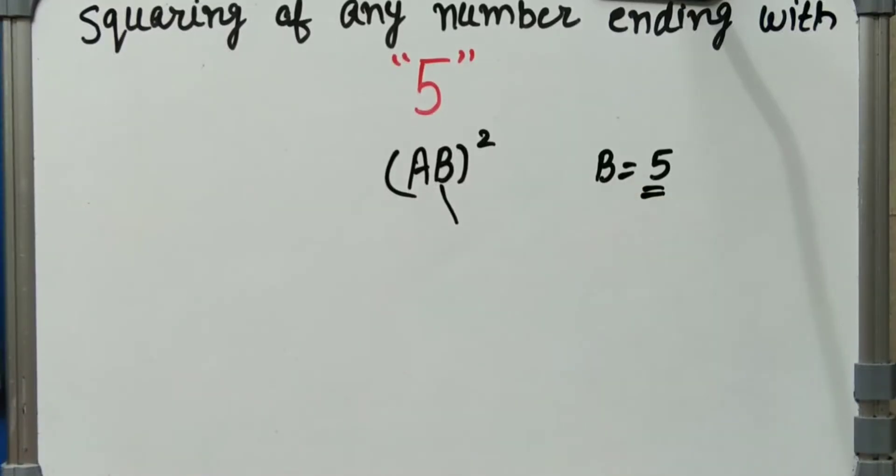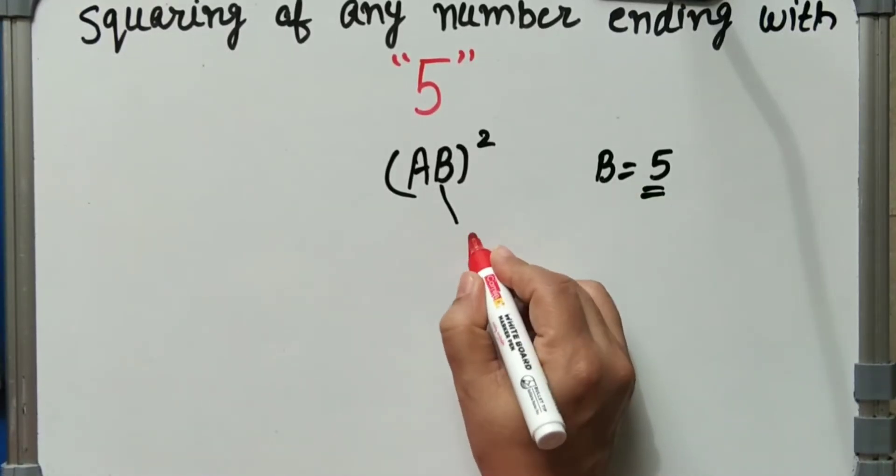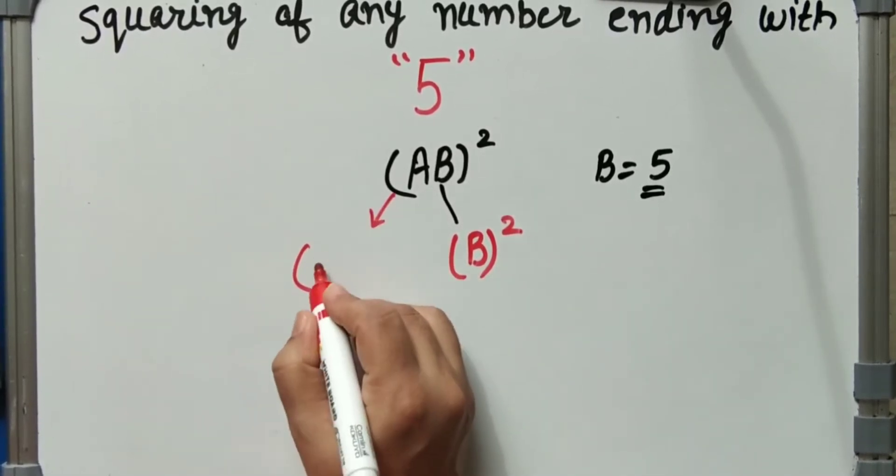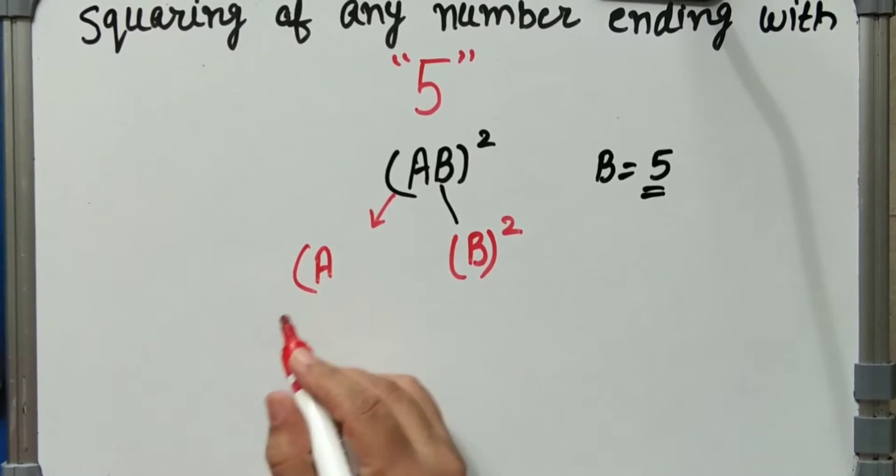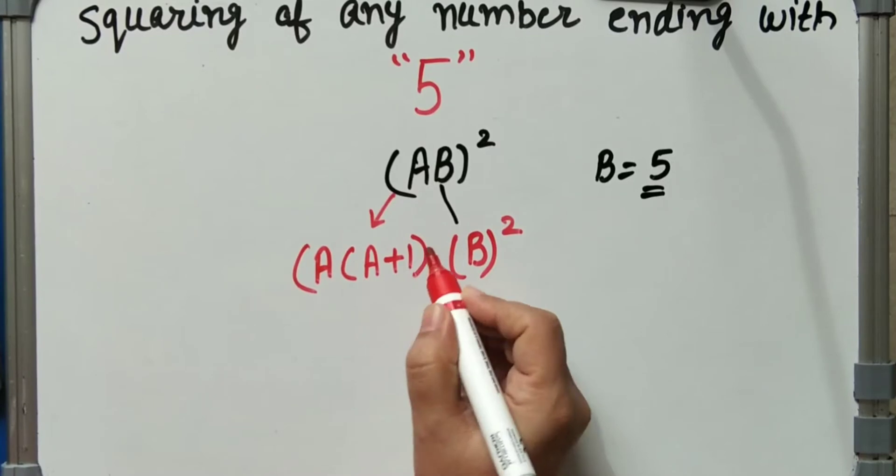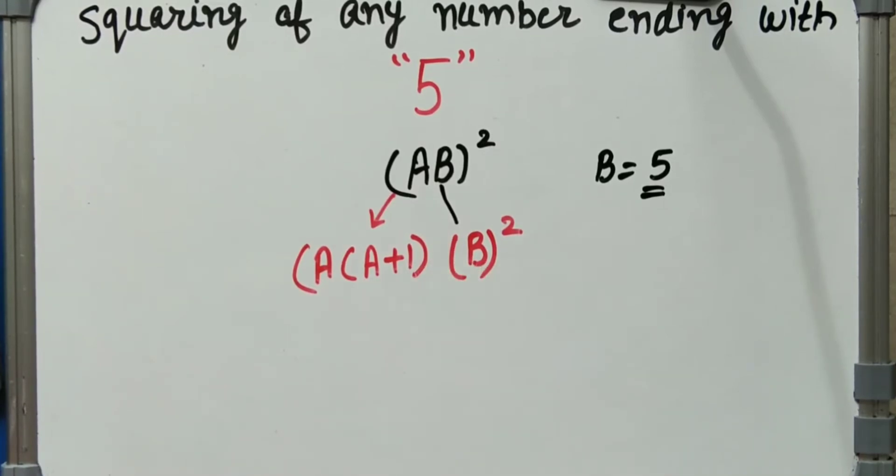B is always 5. So firstly we will do here B squaring, and A we will take same as, and next we will add one number in A, where A is any number.